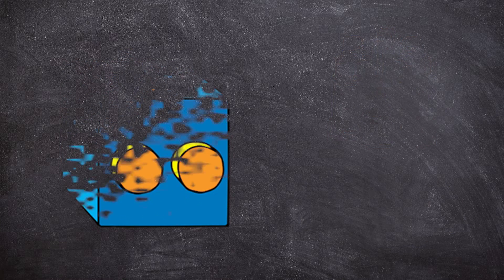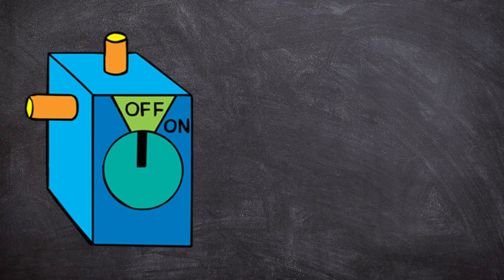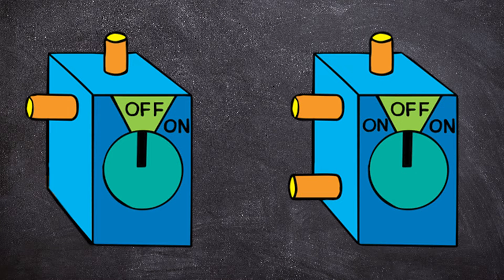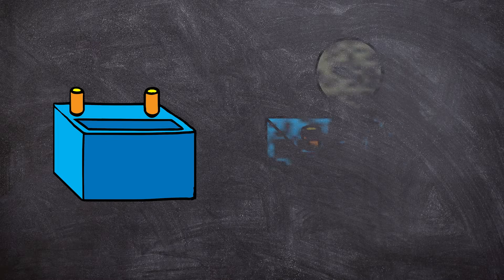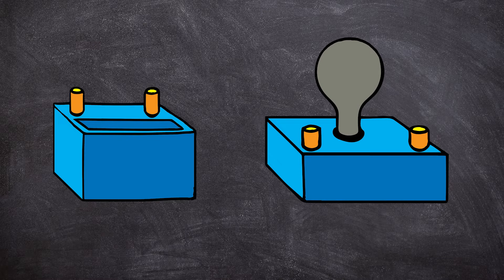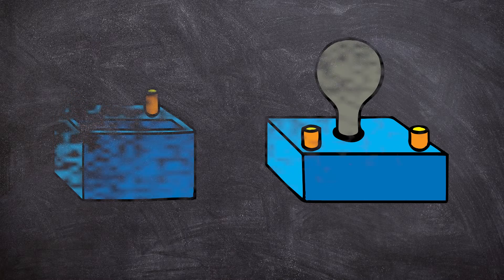Now the switches we will be using. This is a graphical representation of a single-pole single-throw switch or SPST, and this is a representation of a single-pole double-throw switch or SPDT. The switches used here will automatically return to the off position when released. This is a representation of a battery and this of a light. Green wires indicate they are part of the control circuit and red wires are part of the operational circuit.